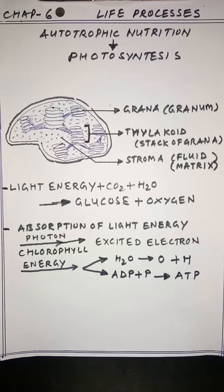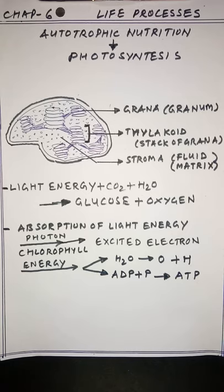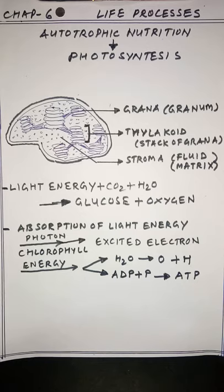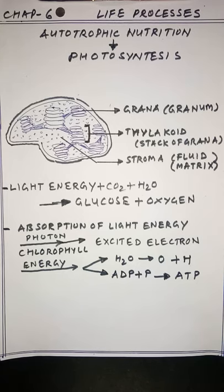In nutrition, we came to know regarding two types of organisms: organisms which can produce their own food are called autotrophs, and another group of organisms which are dependent on autotrophs or producers are called heterotrophs. So autotrophs feed themselves and also feed all other heterotrophic organisms, creating an exchange of energy between autotrophs and heterotrophs.